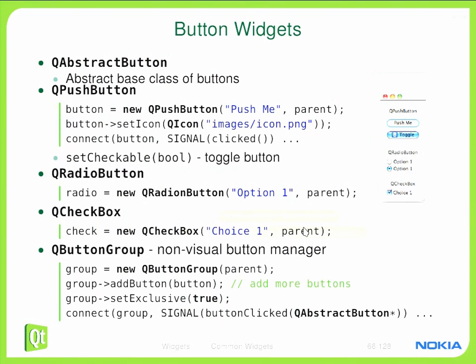Next is button widgets. QAbstractButton is the base of all button classes, providing generic functionality that each button would show. The most popular button class is certainly QPushButton. QPushButton is created through new QPushButton, passing the text to be displayed on the button and the parent as a parameter.